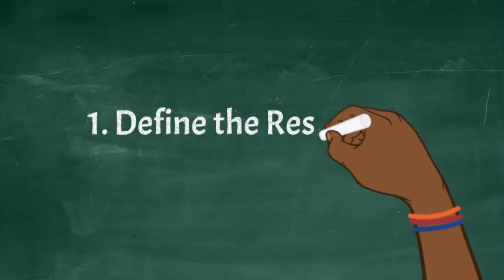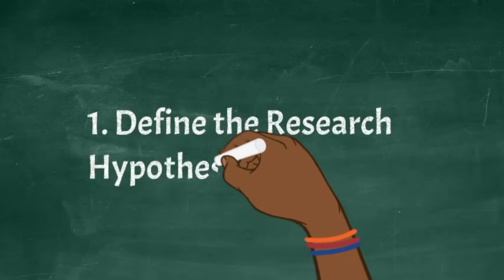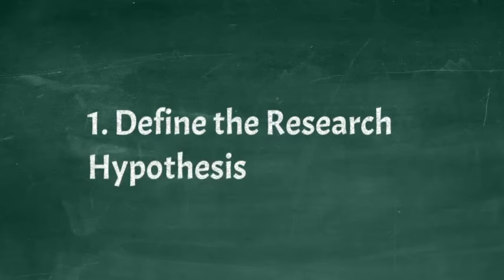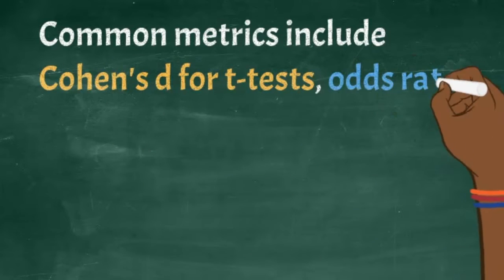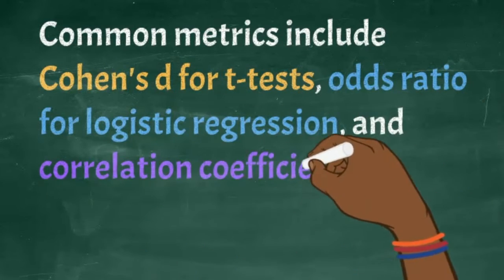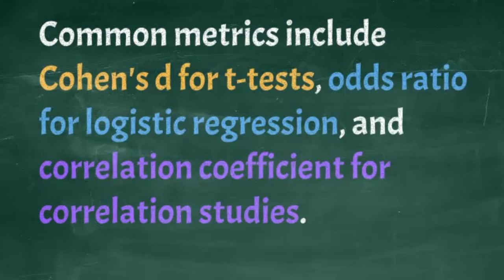First step, determine the research hypothesis. Define it. So first, determine the effect size. The effect size is a measure of the magnitude of the phenomenon you are studying. Common metrics for determining the effect size include Cohen's D for t-tests, odds ratio for logistic regression, and correlation coefficient for correlation studies.